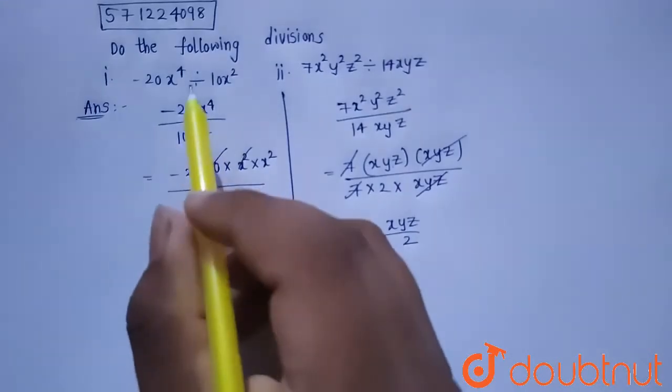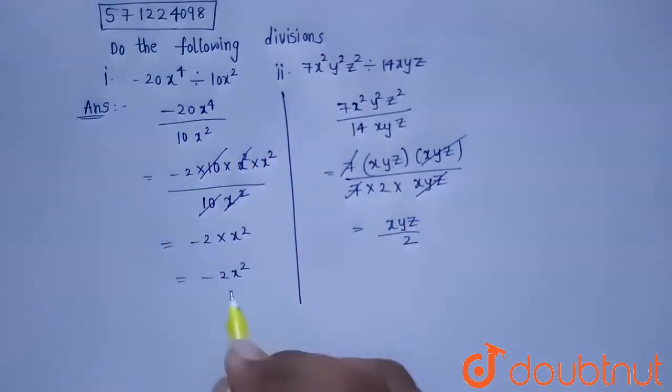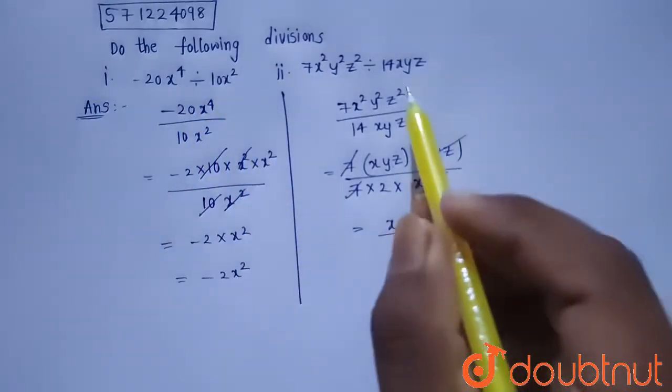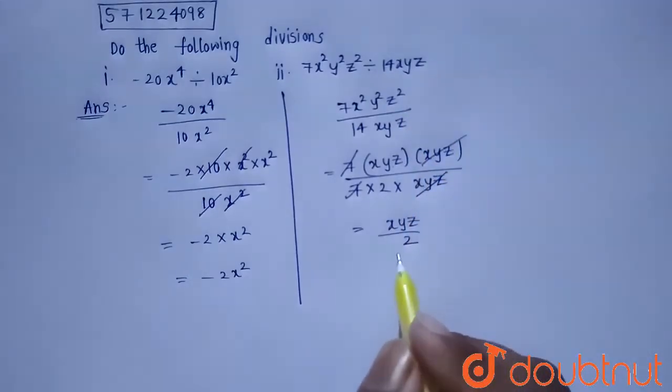So the first expression minus 20 x power 4 divided by 10 x square equals minus 2 x square, and the second division value equals x y z divided by 2.